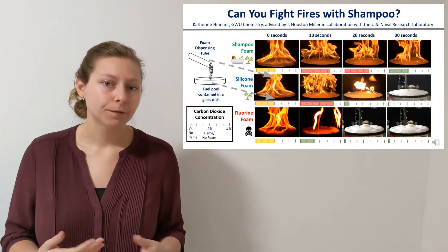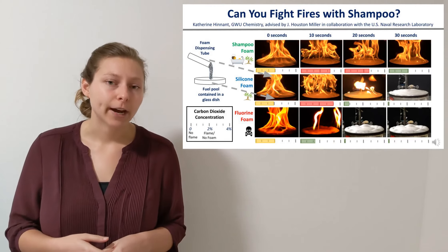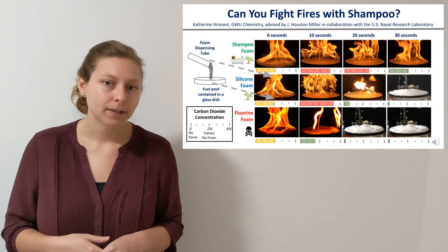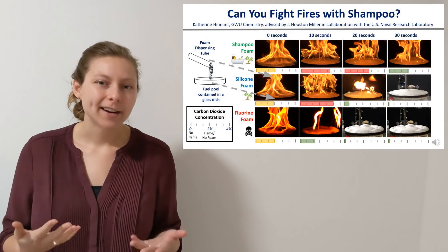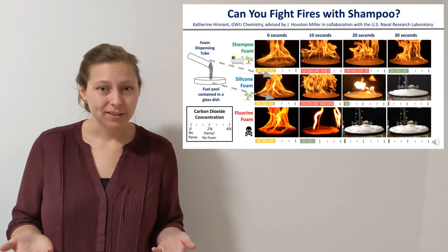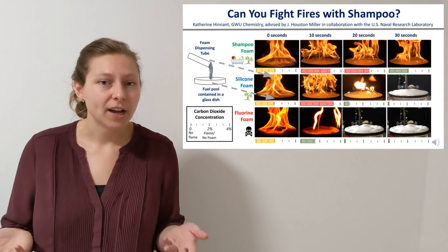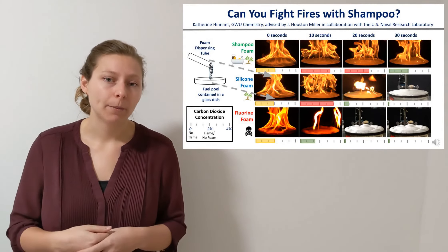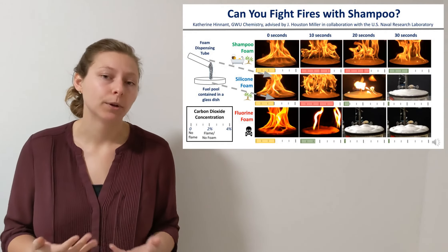We want to replace fluorine surfactants with environmentally friendly alternatives, but we want to make sure that the fire still goes out quickly. So can we put out fires using shampoo? If not, what other surfactant chemical structures might we use to put out fires?